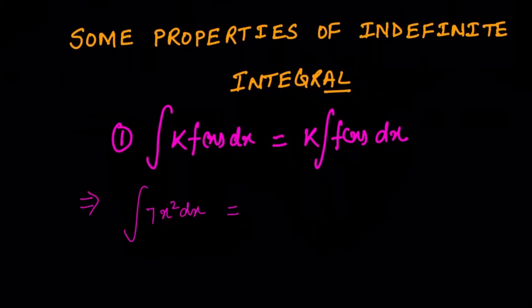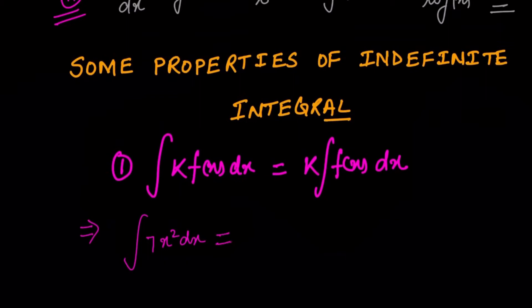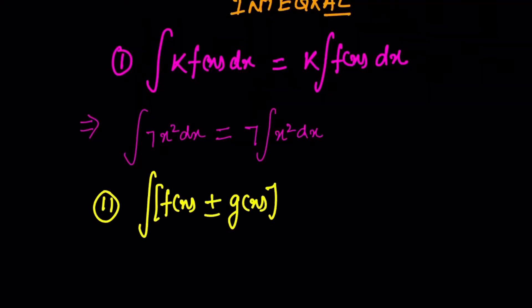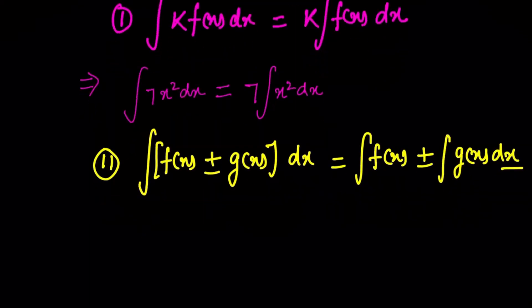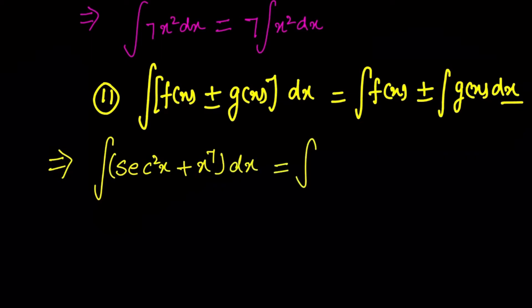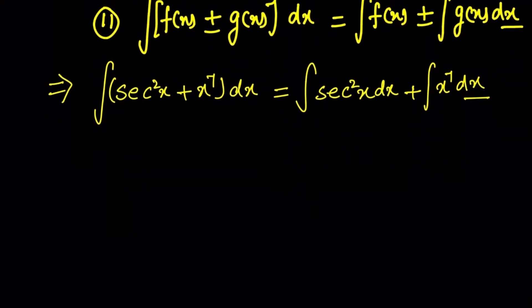For example, ∫7x² dx — here 7 is a constant, so we take 7 outside: 7·∫x² dx. The second general theorem is: ∫(f(x) ± g(x)) dx — whenever two functions are in addition or subtraction, we separate them and integrate each individually. For example, ∫sec²(x) dx + ∫x⁷ dx — these two functions, sec²(x) and x⁷, are separated: ∫sec²(x) dx plus ∫x⁷ dx.